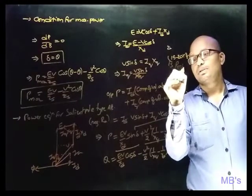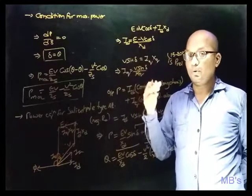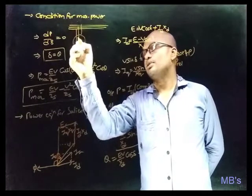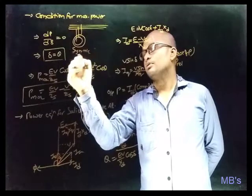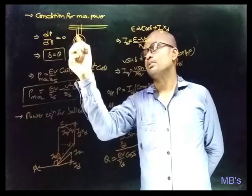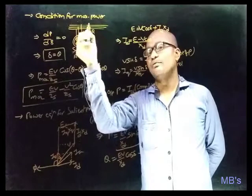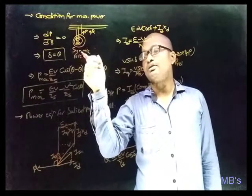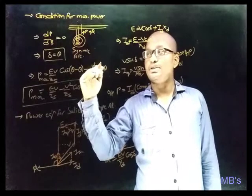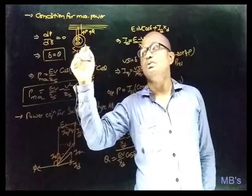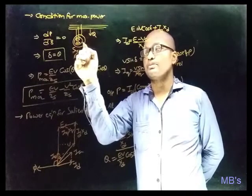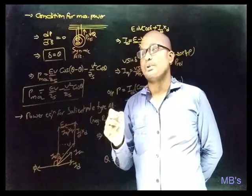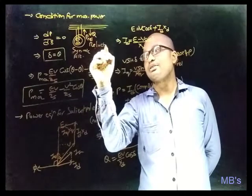The reluctance power constitutes about 15 to 20 percent of the total power. When a salient pole alternator is connected to an infinite bus bar and field excitation fails, it continues to deliver power. It takes reactive power from the bus bar to create working flux and then delivers reluctance power, acting as a reluctance generator.